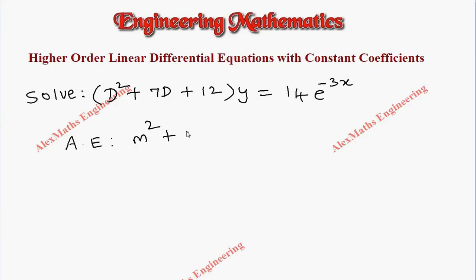The auxiliary equation is m² + 7m + 12 = 0. We can factorize this: (m + 3)(m + 4) = 0. So we get two values for m, which are -3 and -4, two different real values.